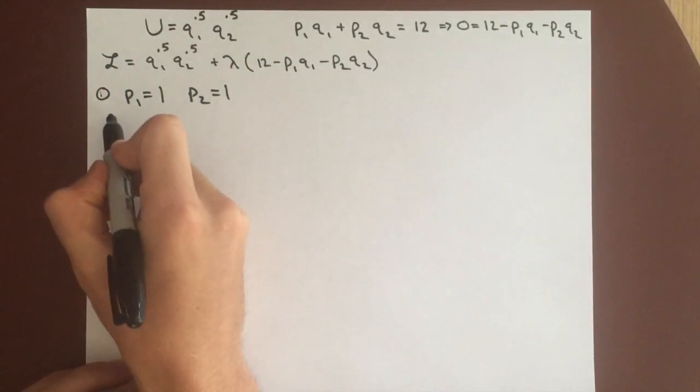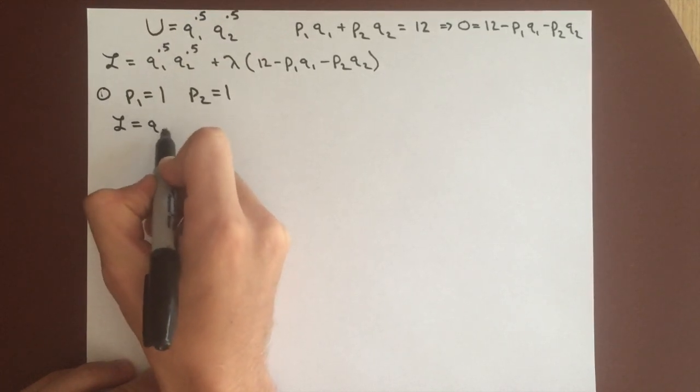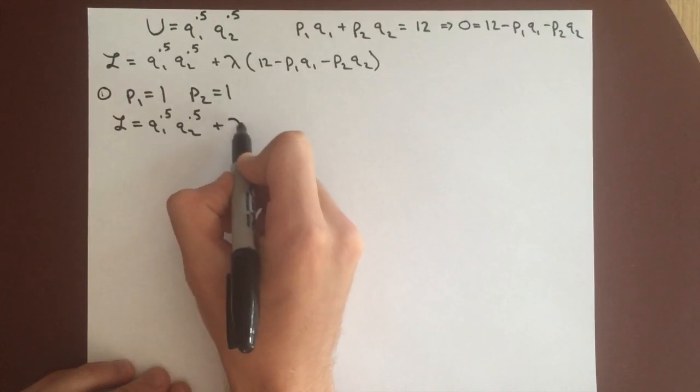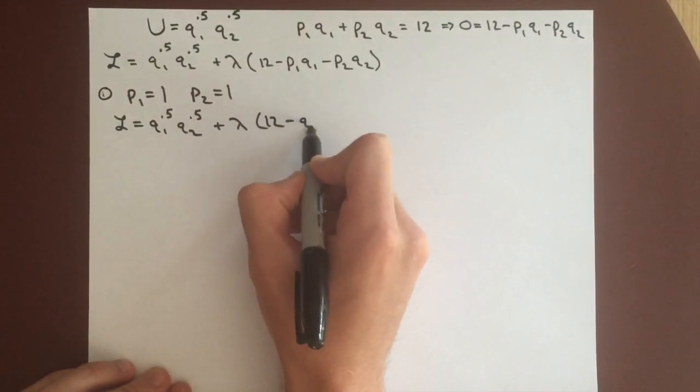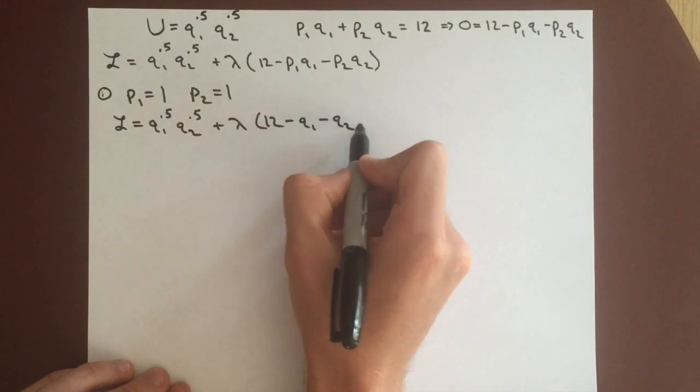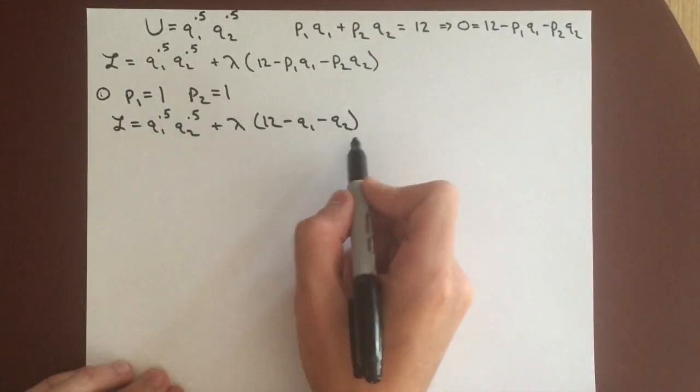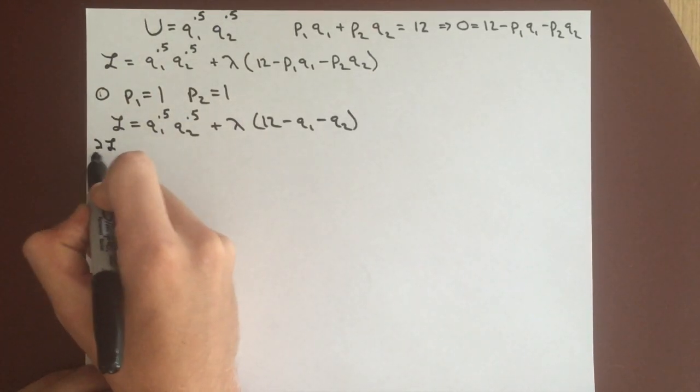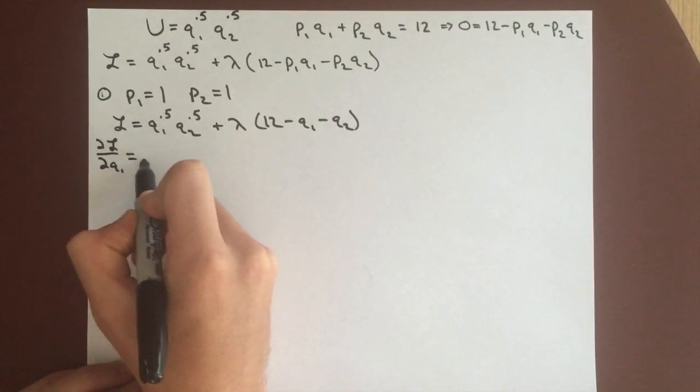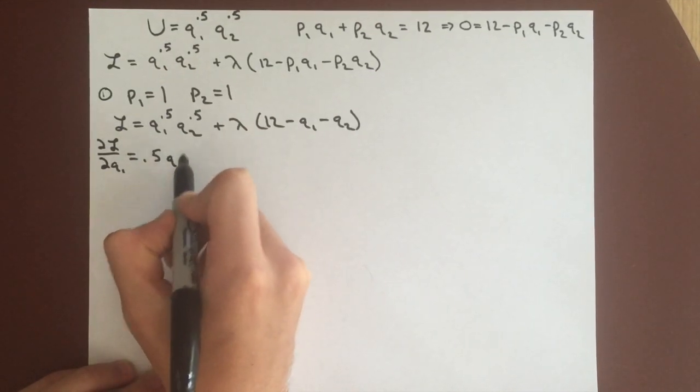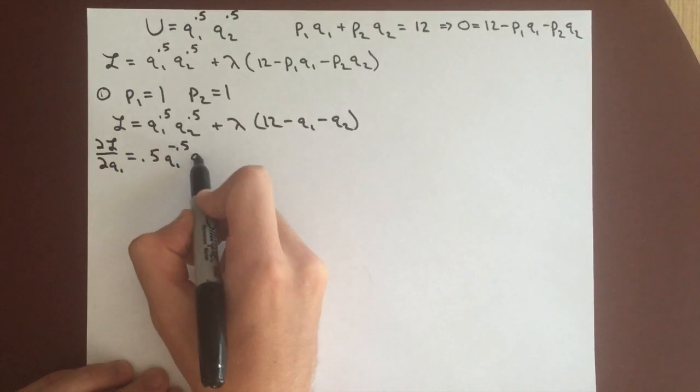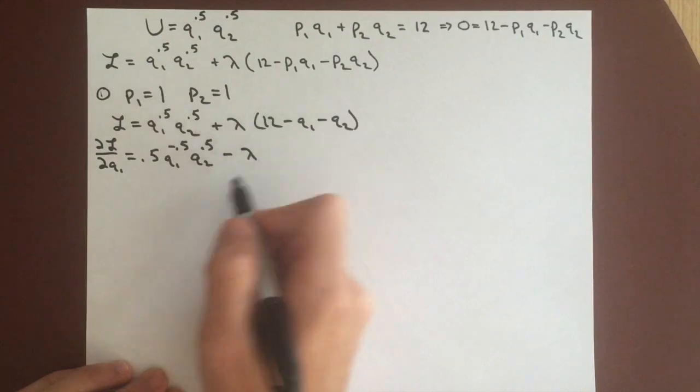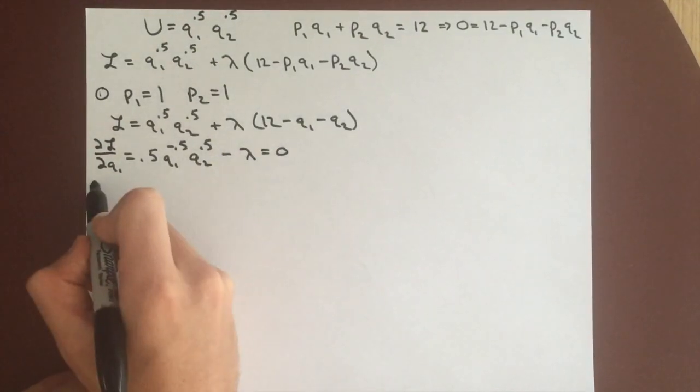This means our Lagrangian becomes q1 to the 0.5, q2 to the 0.5, plus lambda times 12 minus q1 minus q2. And we can take the partial derivative in each case here, so partial derivative for q1 gives us 0.5 q1 to the negative 0.5, q2 to the 0.5, and then minus lambda. And remember we're going to set each of these partial derivatives equal to 0.